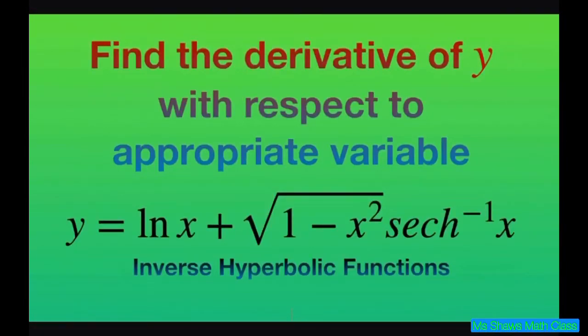Hi, everyone. We're going to find the derivative of y with respect to x. We have y equals ln of x plus the square root of 1 minus x squared times inverse hyperbolic secant of x.